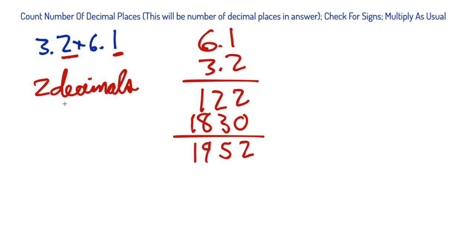And then how many decimal places in the answer? Two. So 19.52 is our answer. Let's try a more complicated example. Why not?